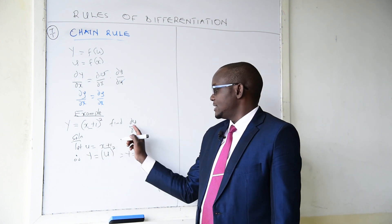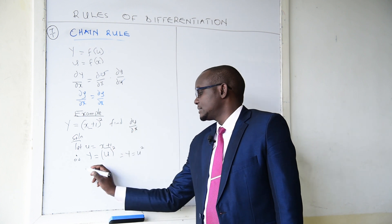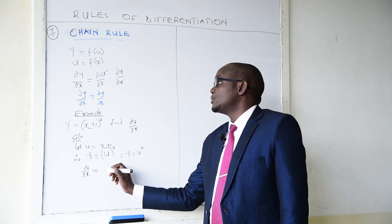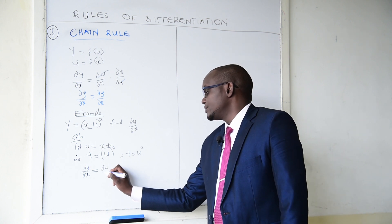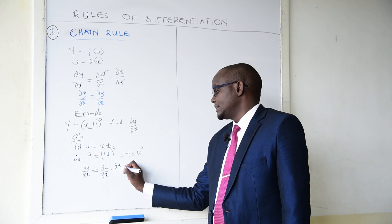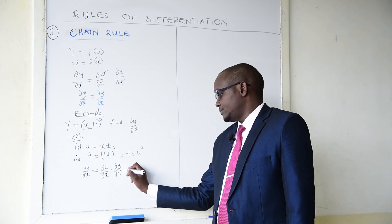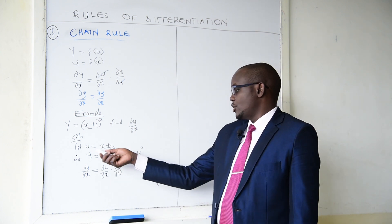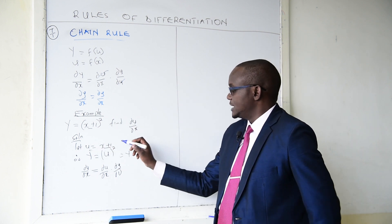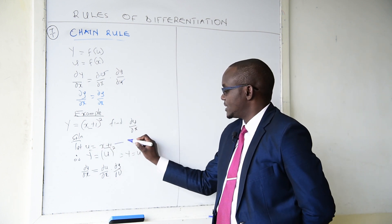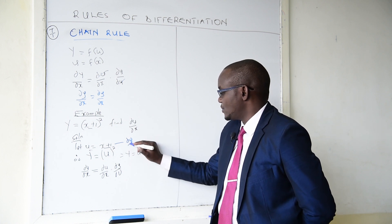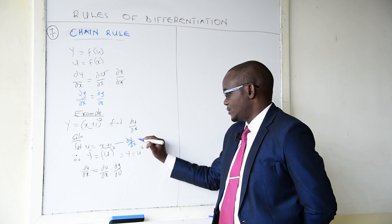To find dy/dx, the chain rule says we need to find du/dx and multiply it by dy/du. We already know what our u is, so we differentiate accordingly.